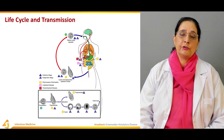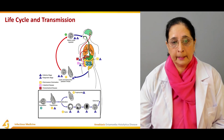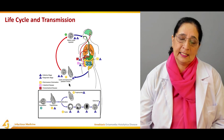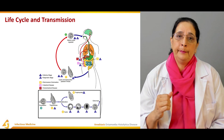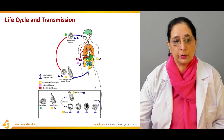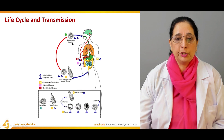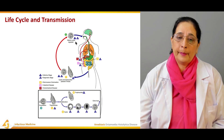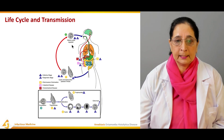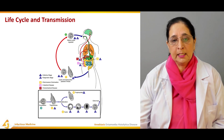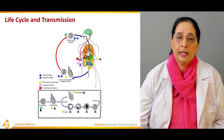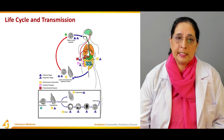Now, the life cycle and transmission of Entamoeba histolytica. It begins with cysts and trophozoites passed in feces. A person infected with Entamoeba histolytica will pass cysts and trophozoites in their feces. These mature cysts, once passed, can contaminate food and water through unhygienic conditions, causing the cysts to be ingested and travel to the intestine.